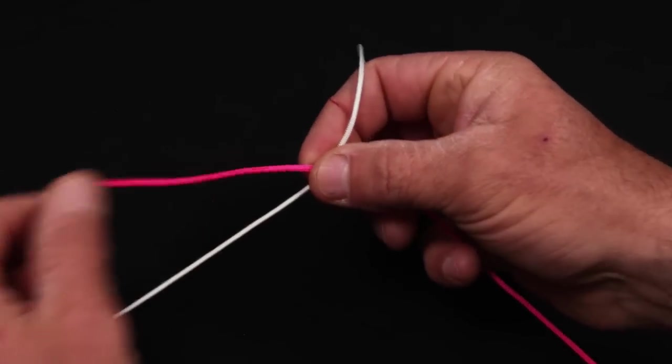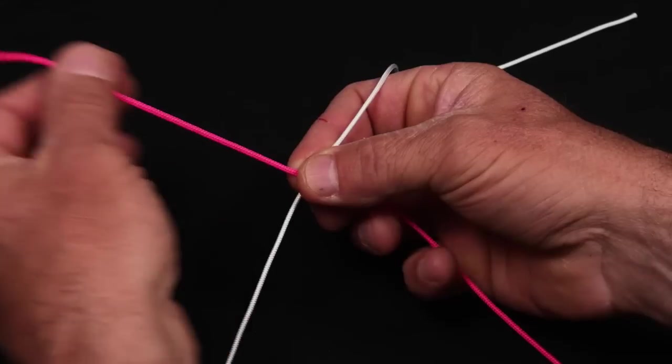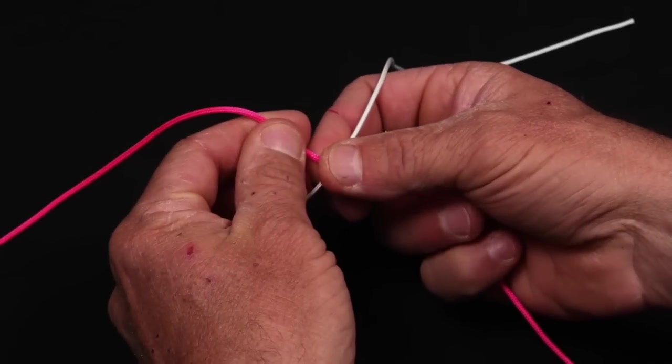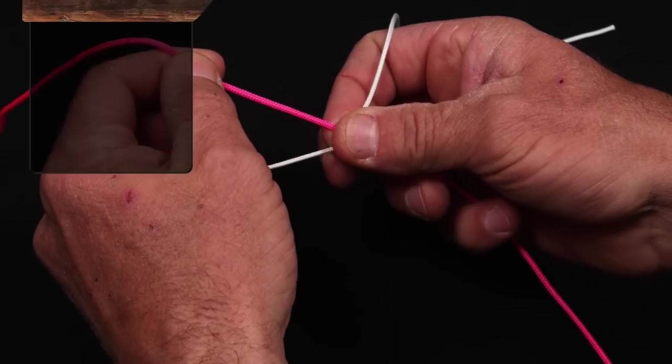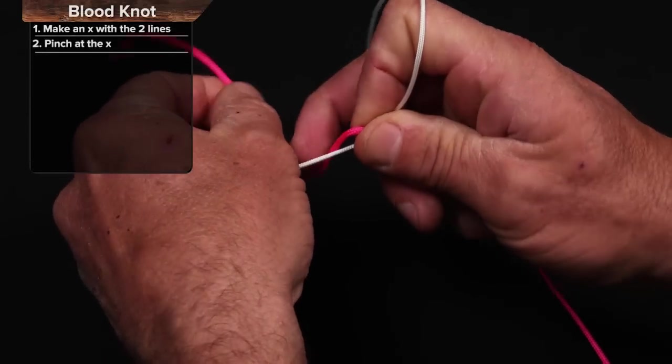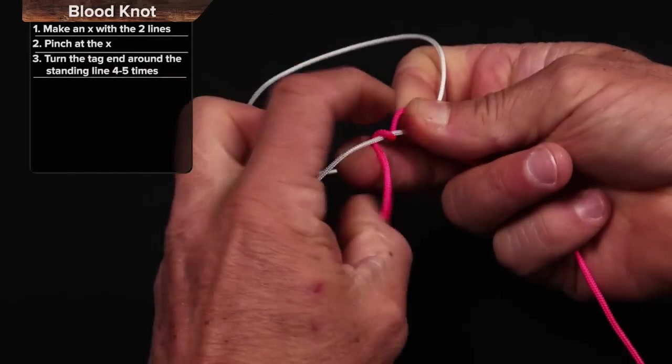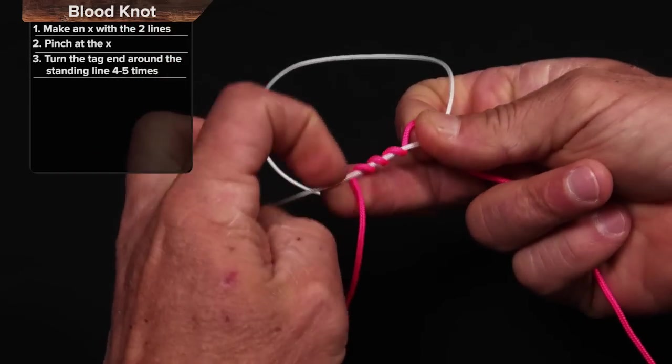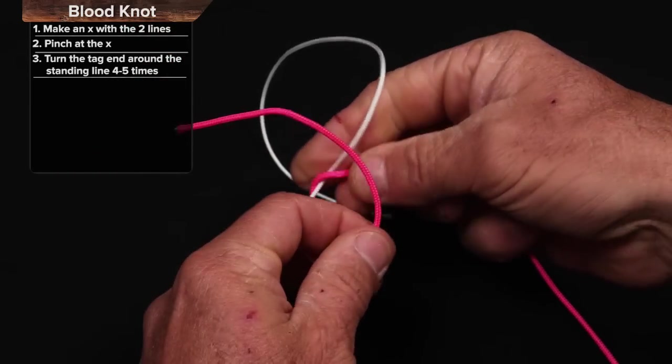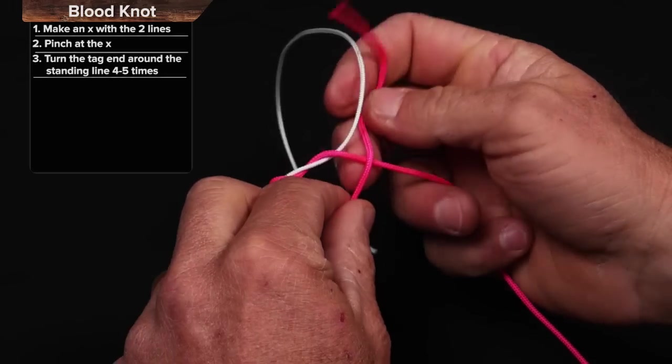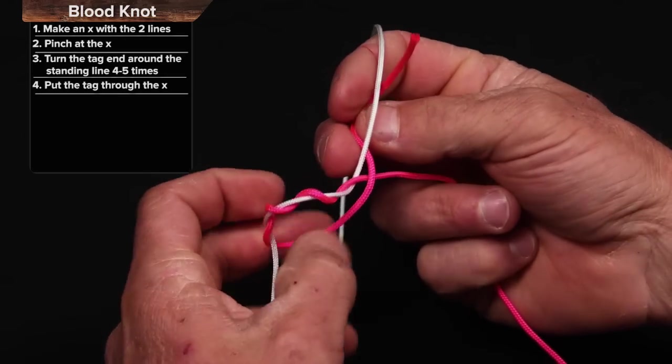Very simple. You're going to make an X with the line. You're going to wrap one. Let's start with the pink one. We're going to wrap this four times. One, two, three, four. Four times around and I'm going to put it right through the X where I was holding.